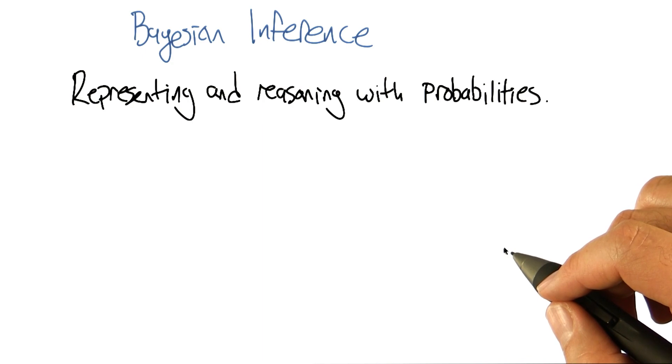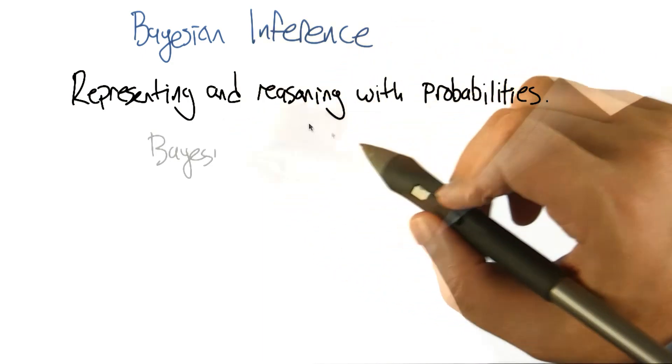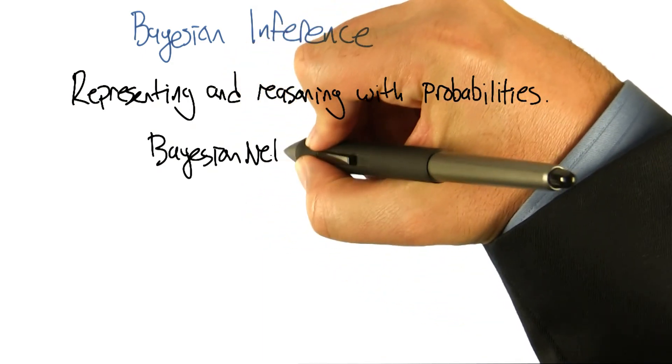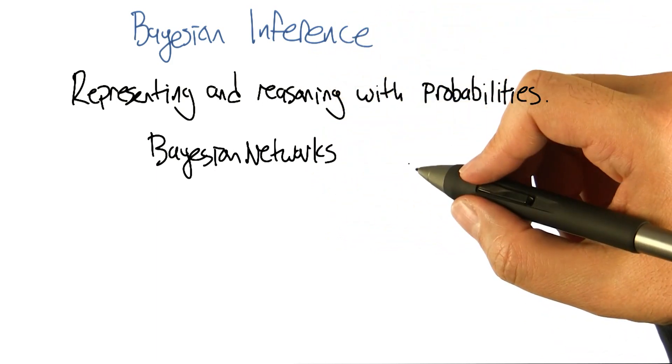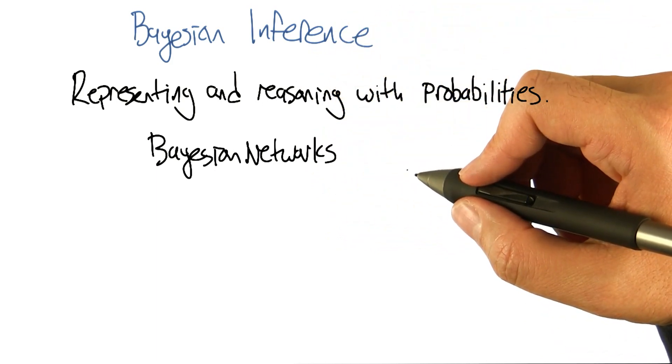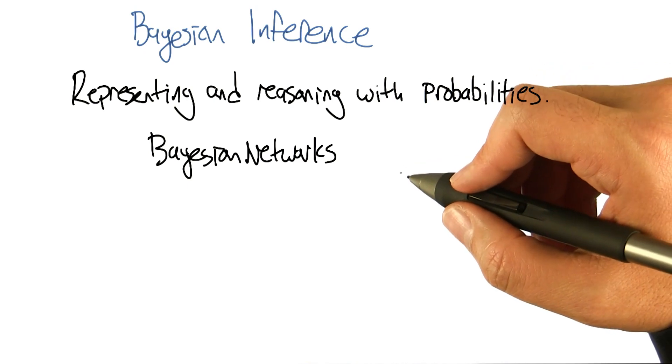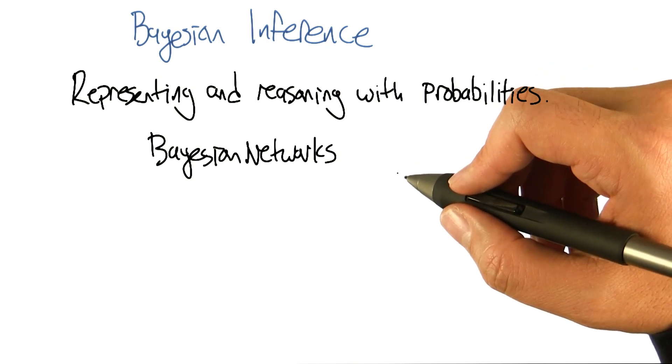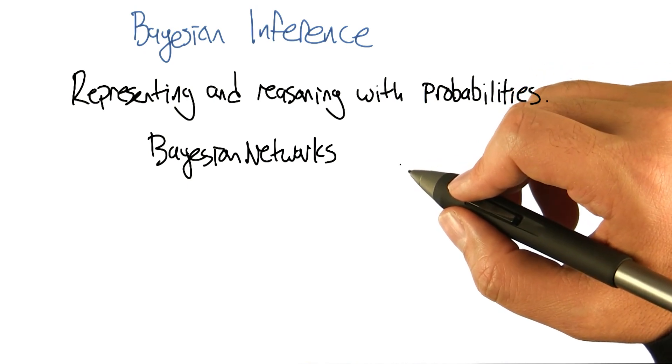All right. So, it turns out that there's this concept called Bayesian networks, which is this wonderful representation for representing and manipulating probabilistic quantities over complex spaces. And so, it fits in really well with the stuff that you were talking about last time.